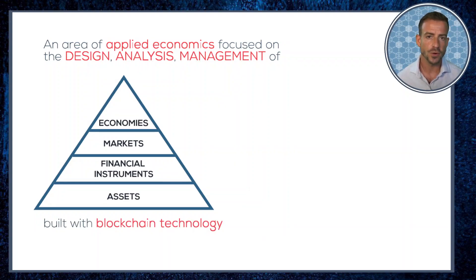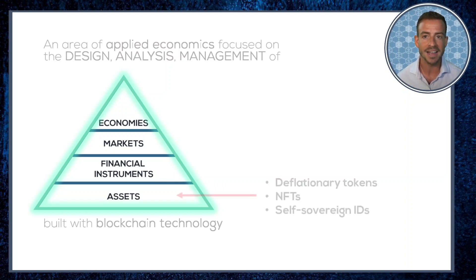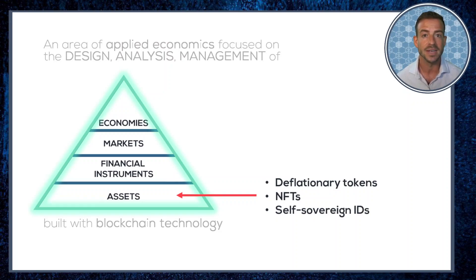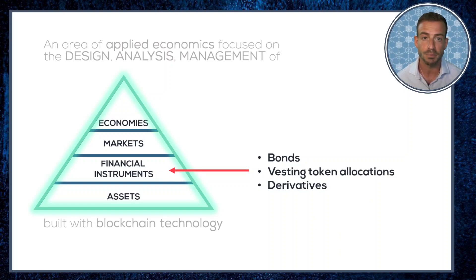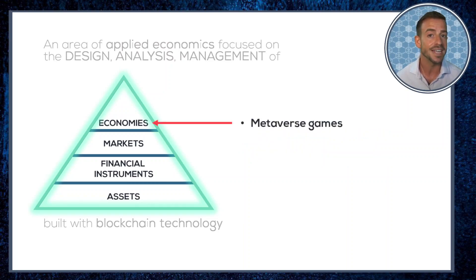Let's unpack this a little. Notice that I'm signposting a pretty broad scope here, emphasizing that we engage in economic thinking to design and build features at all economic scales. At the bottom, our assets include deflationary tokens, NFTs, and self-sovereign IDs. Next up, we have financial instruments that include bonds, vesting token allocations, and derivatives. At the markets level, examples include decentralized exchanges, data markets, and cloud infrastructure markets. And as examples of economies, we famously have entire sandbox-style game metaverses.